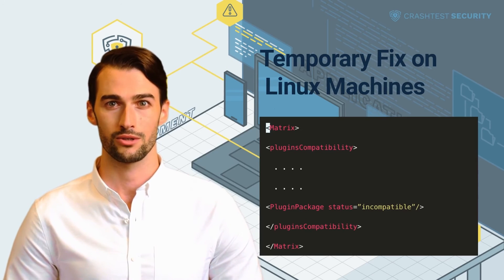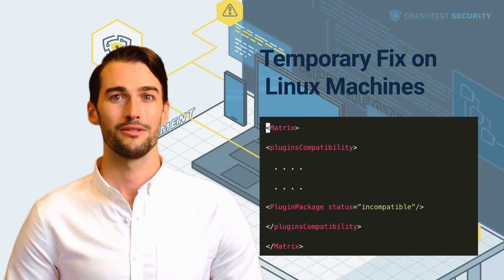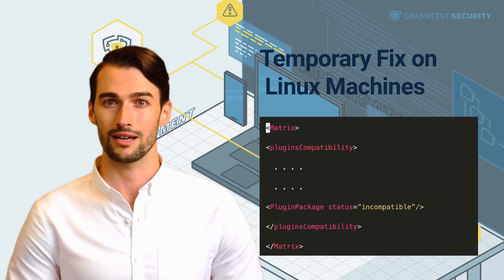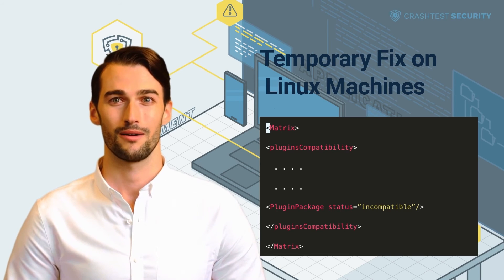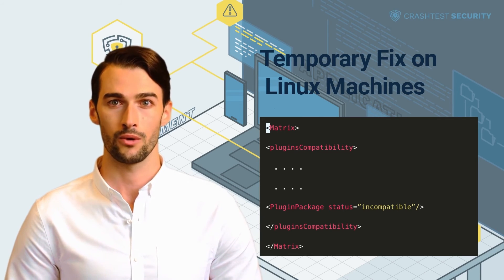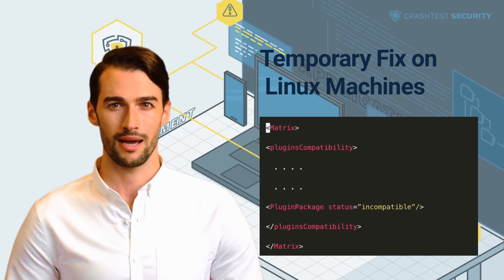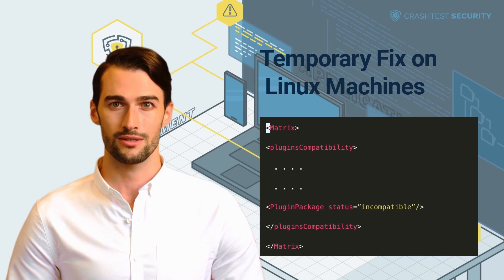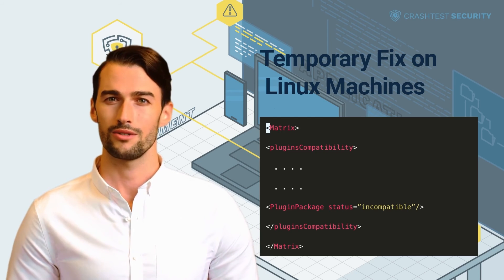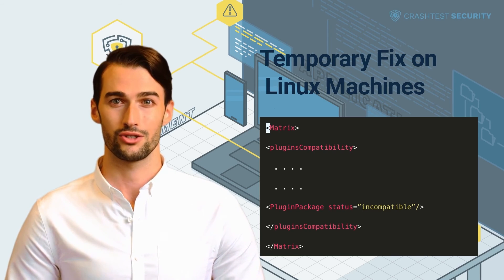Temporary fix on Linux machines. For Linux machines, this is achieved by following the steps below. 1. Connect to the virtual machine using an SSH session and root credentials. 2. Back up the /etc/vmware/vsphere-ui compatibility matrix file. 3. Open the compatibility matrix file in a preferred text editor. 4. Add the code shown in the video to the file. 5. Save and close the compatibility matrix file. 6. Stop and restart the vsphere-ui service. The VMware vROps Client plugin is rendered incompatible through the above steps, eliminating the CVE-2021-21972 vulnerability from the HTML5 vSphere client.